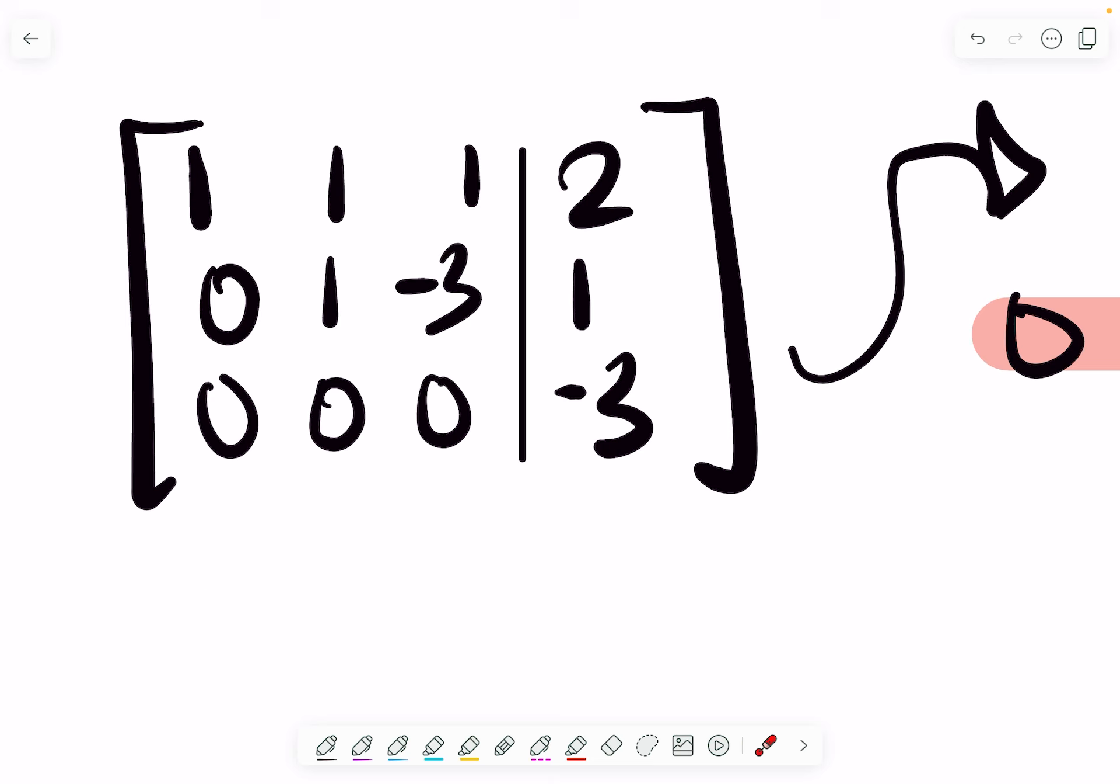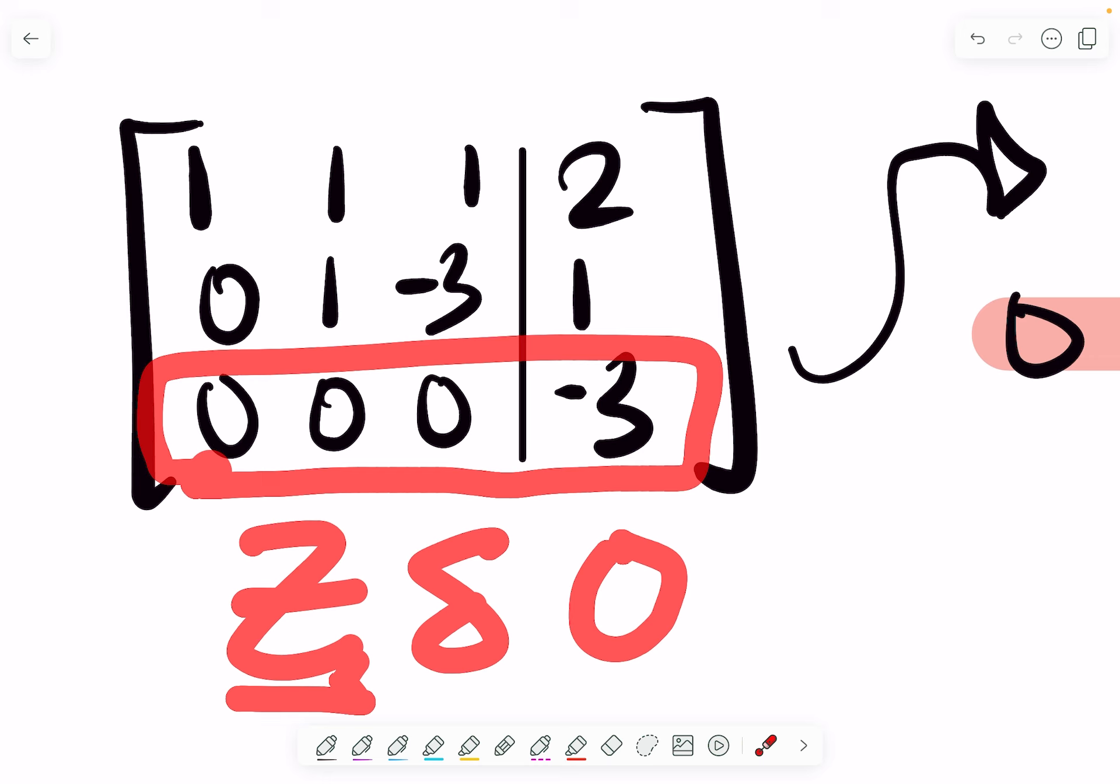For example, if I asked you to find out if this matrix is in row echelon form, then you would check, and then you would ask yourself: are all the zero rows at the bottom of the matrix? And then you would say, well, is this considered a zero row? Are we looking at the entire row? Are we just looking at this row right here?